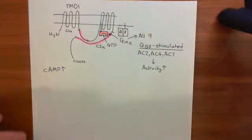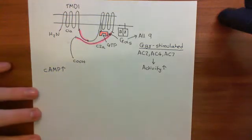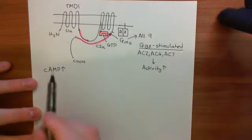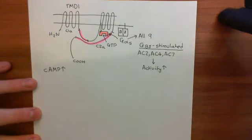Welcome back to this next video in which we are discussing the adenylyl cyclase protein kinase A pathway. So far everything has led to cyclic AMP going up in the cytoplasm. What we now want to discuss is how this is going to activate protein kinase A.